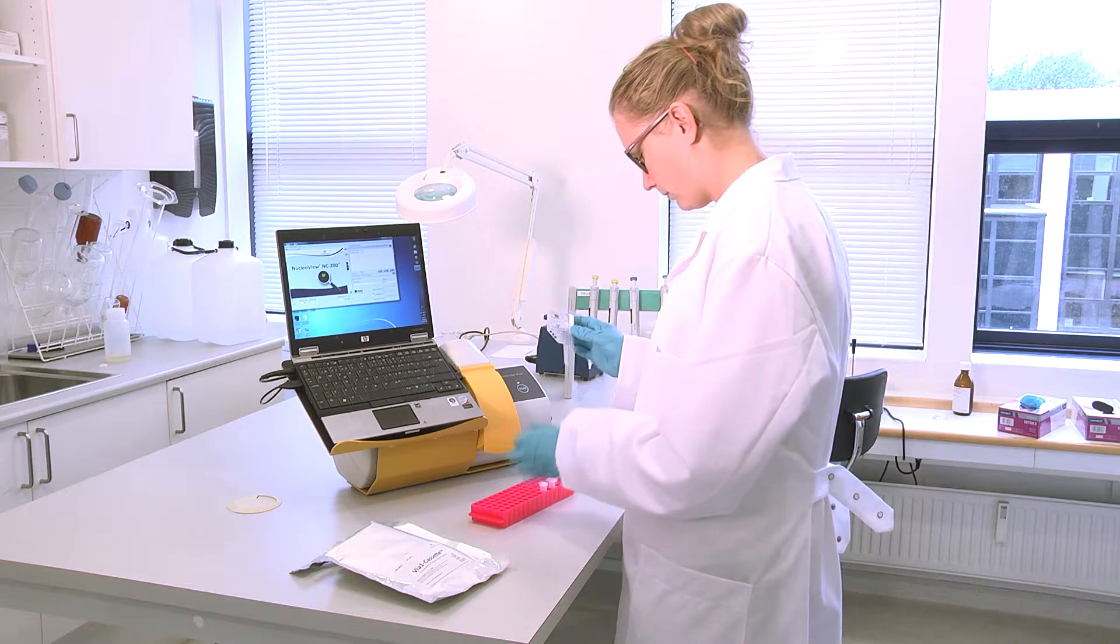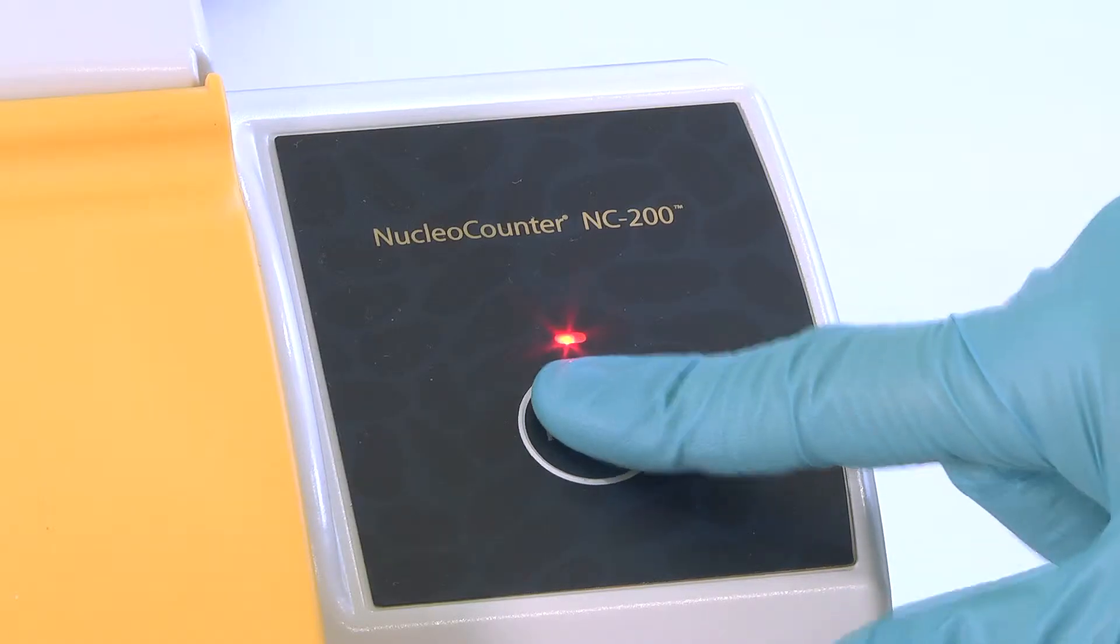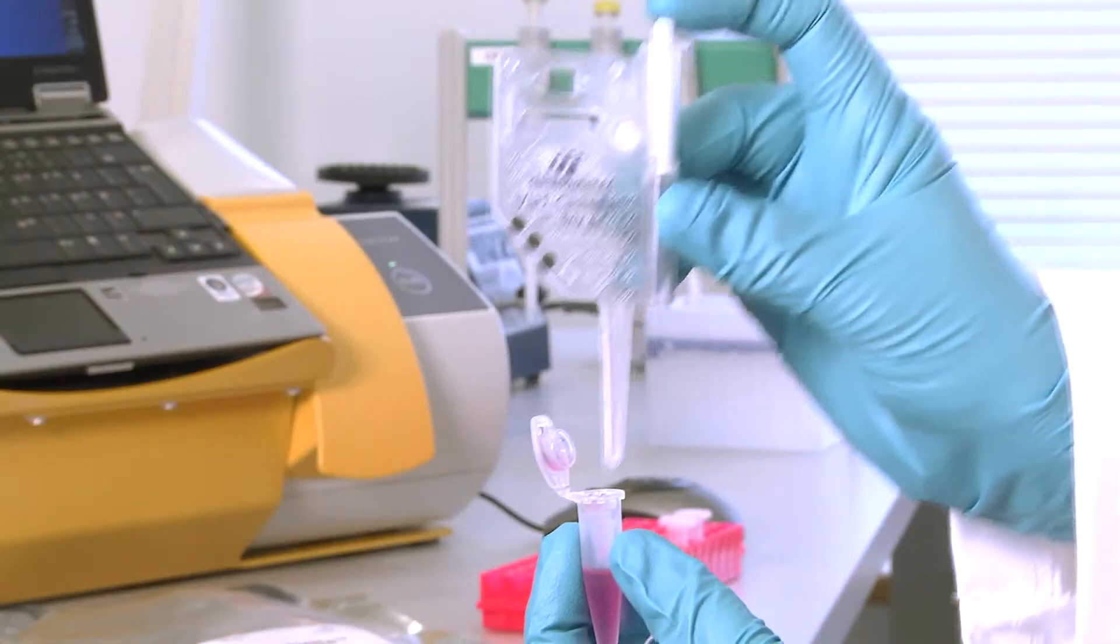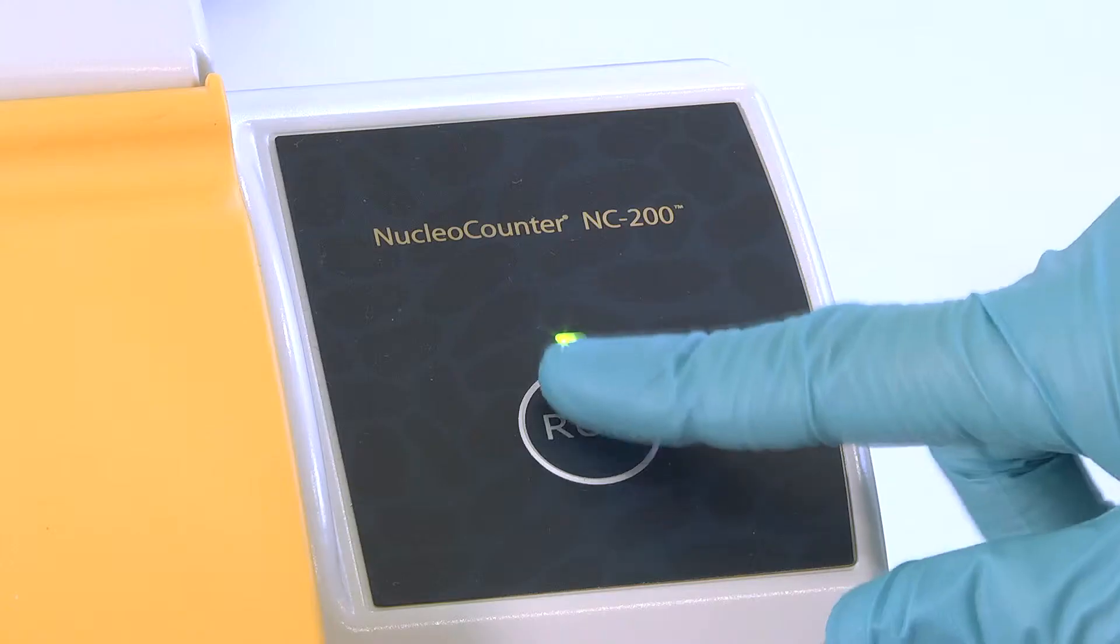First, insert a ViA1 cassette with a sample of cells mixed with the lysis buffer for the total cell count, followed by a ViA1 cassette with a sample of cells without the lysis buffer for the non-viable count.